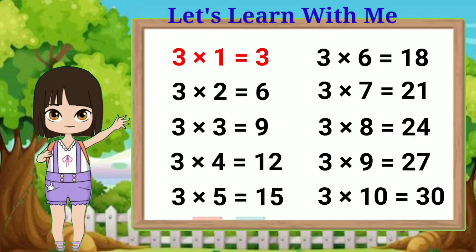Let's repeat it. Three ones are three, three twos are six, three twos are six, three threes are nine, three fours are twelve, three fives are fifteen, three fives are fifteen, three sixes are eighteen, three sixes are eighteen. Three sevens are twenty-one.